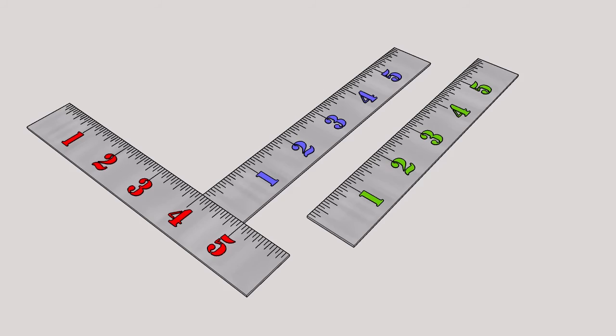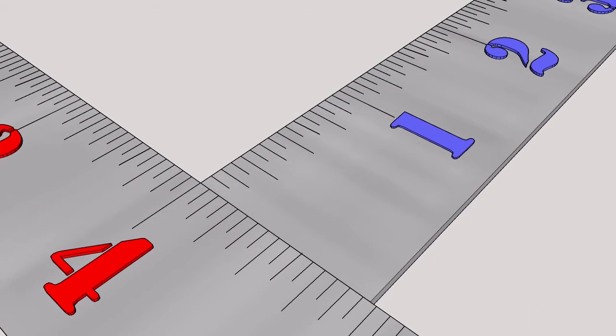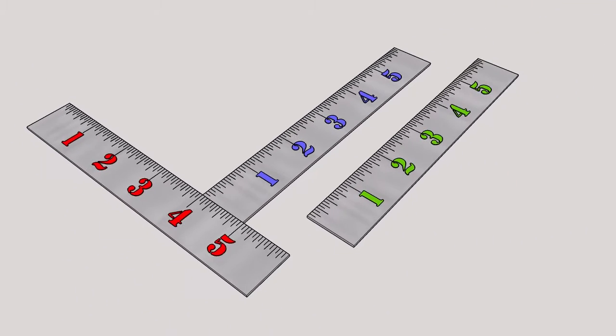Now the first red ruler is moved into place and the number 4 is lined up with the end of the blue ruler.